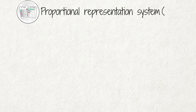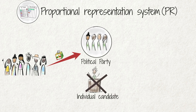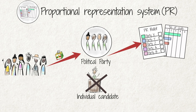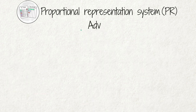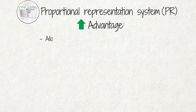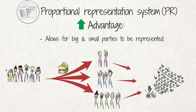Under the PR System, voters vote for a political party rather than a candidate. A political party, through a party list, nominates its candidates ahead of the election. The allocation of PR seats corresponds closely with the proportion of the total votes cast for each political party in the election. The advantage of PR is that it allows both big and small parties to be represented. For example, if a party receives 15% of the votes, it will also receive about 15% of the seats.